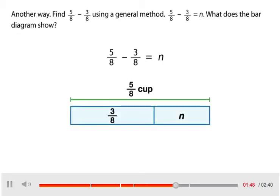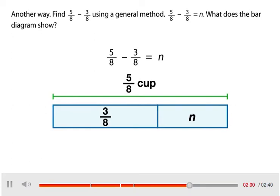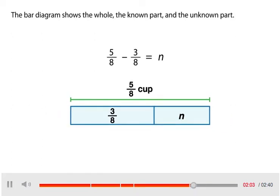Another way. Find 5 eighths minus 3 eighths using a general method. 5 eighths minus 3 eighths equals n. What does the bar diagram show? The bar diagram shows the whole, the known part, and the unknown part.